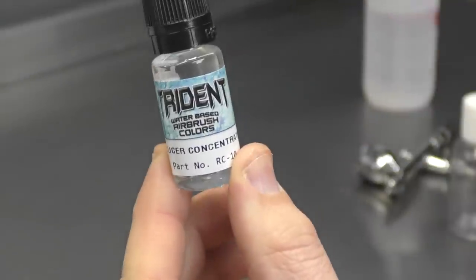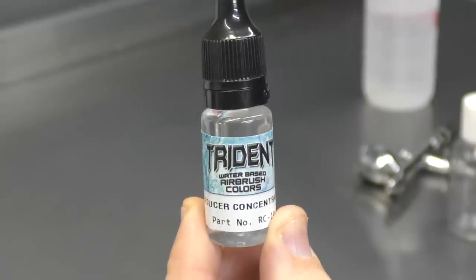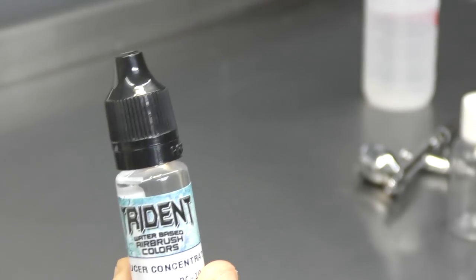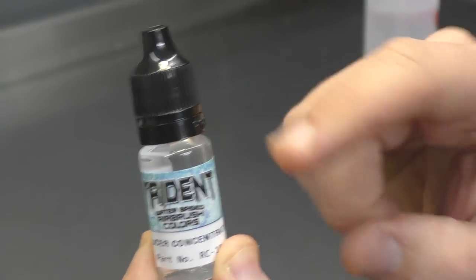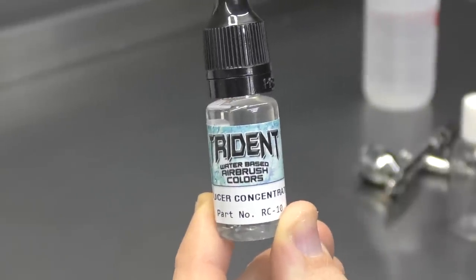So this 10 ml bottle effectively will make a 100 ml of usable reducer. So what you do is you get a 100 ml bottle, tip this 10 ml into that and then fill the rest up with bottled water. And that's going to give you your 100 ml of usable reducer.